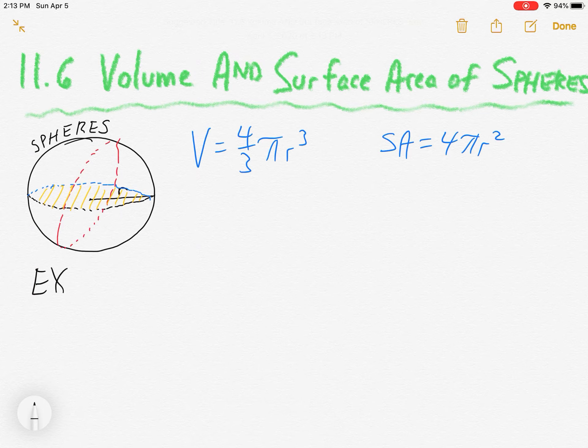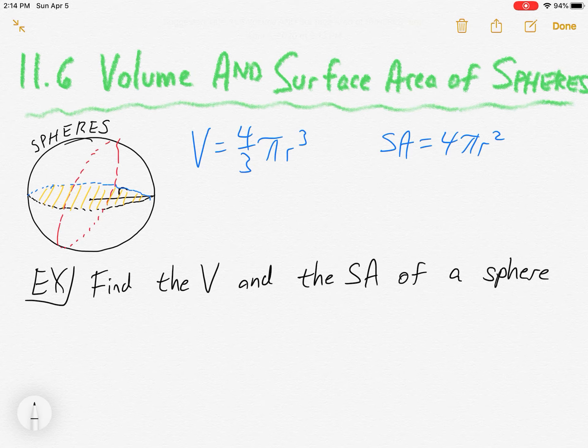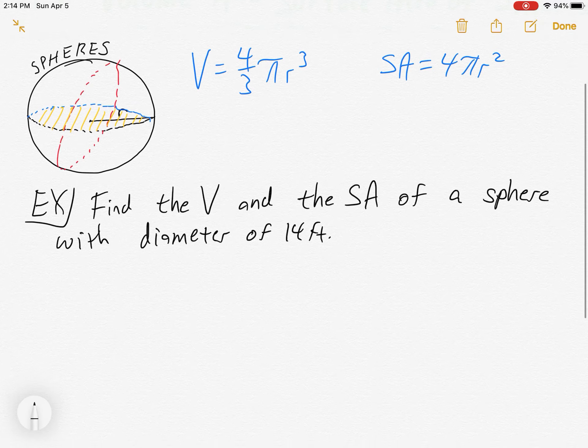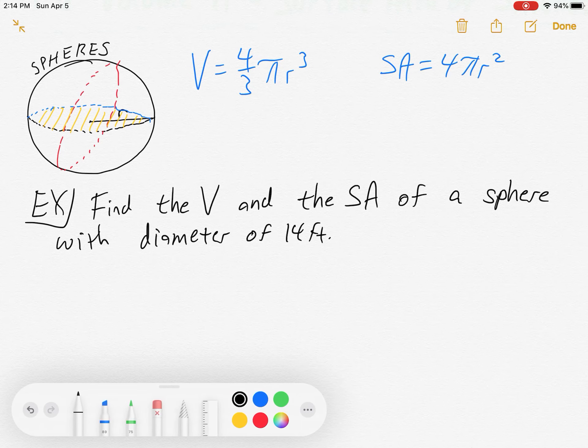Well, let's just do a quick example and we're done. There's not much to this section either. So let's find the volume and the surface area of a sphere with diameter of 14 feet. And yeah, it's going to be tricky and tell you the diameter and what do you have to do first before we plug in the formulas.